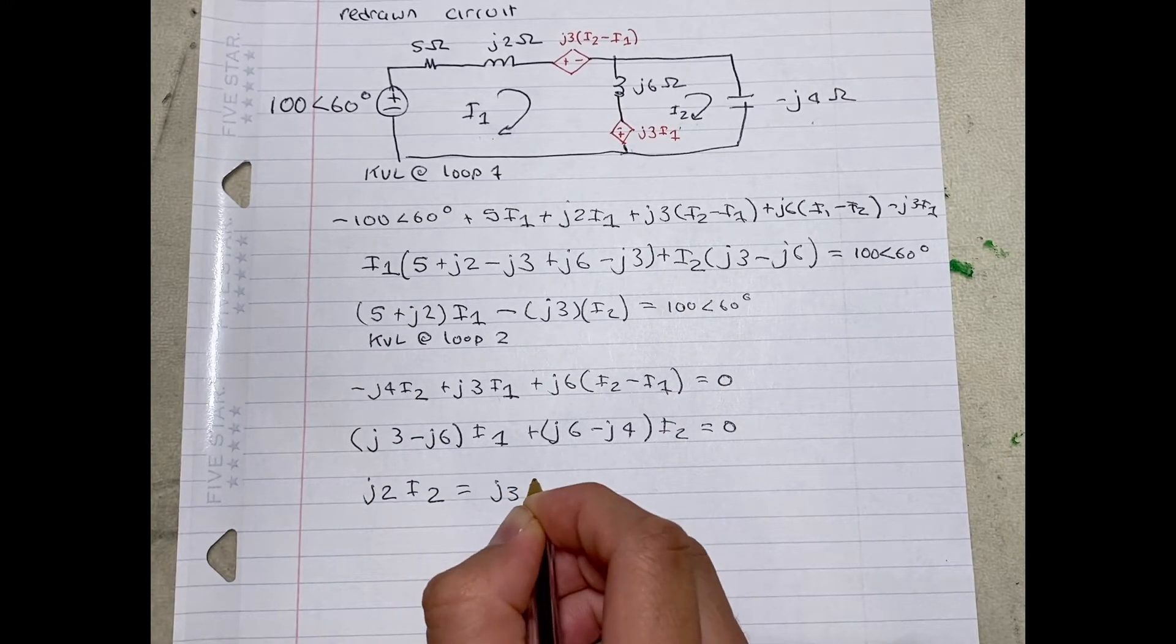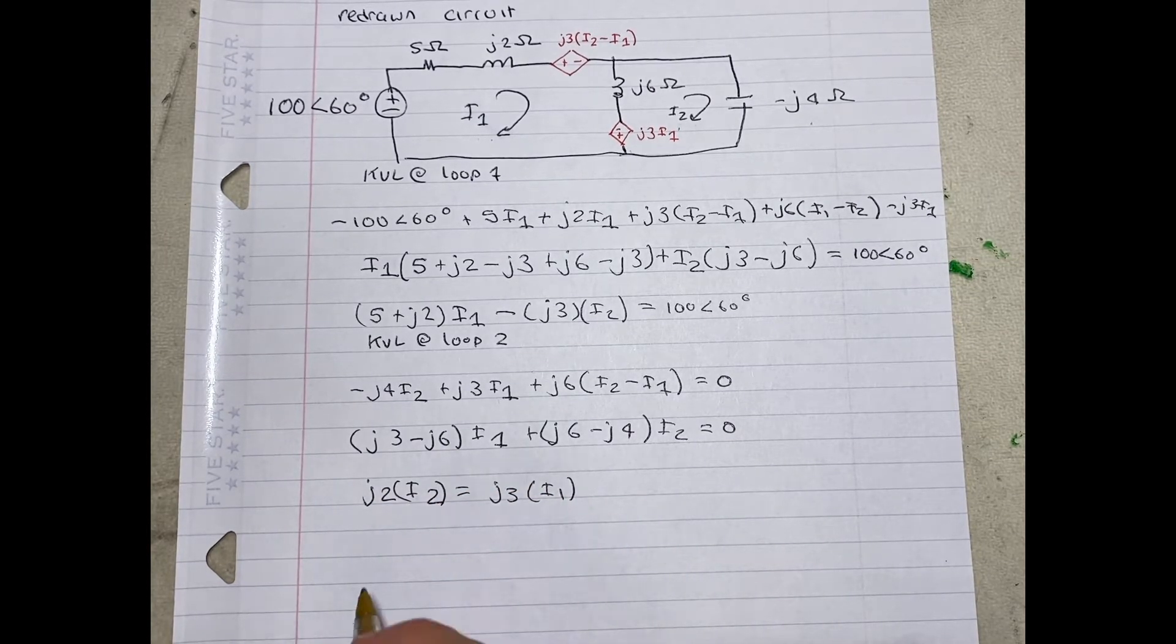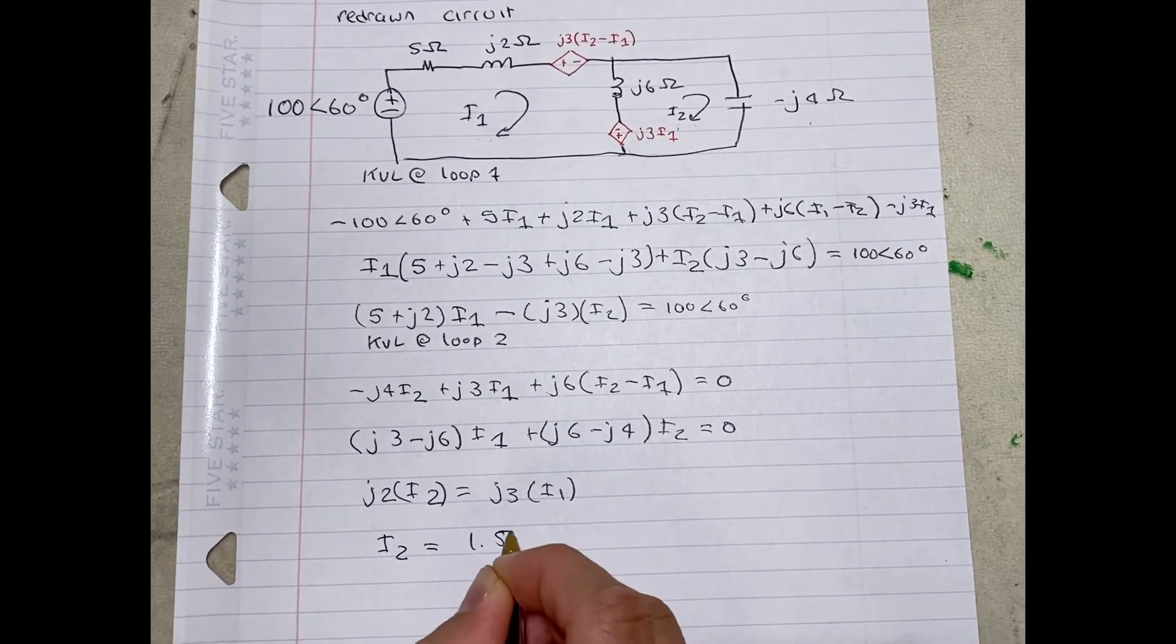And we can simplify this to I2 is equal to 1.5 I1.